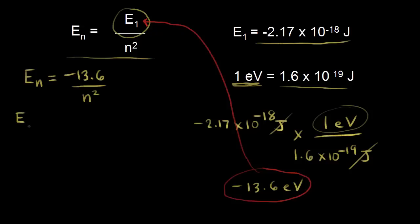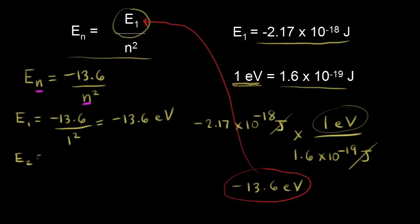The energy for the first energy level: E1 equals negative 13.6 divided by one squared, which is just one, giving negative 13.6 electron volts — we already knew that. For the second energy level, E2 equals negative 13.6 divided by two squared, and when you do that math, you get negative 3.4 electron volts.